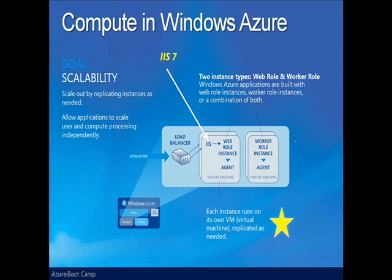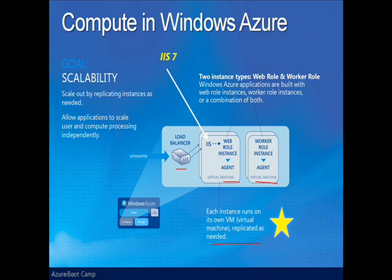With regard to computation, you'll create applications that consist of web and worker roles. For scalability, you dictate to the Azure cloud environment how many copies or instances of each role you want to exist. Each instance runs on its own virtual machine within the fabric. For roles exposed to outside traffic — web roles — Azure also provides a load balancer to spread traffic amongst the running instances automatically, providing increased scalability simply by dictating more instances of your compute roles.